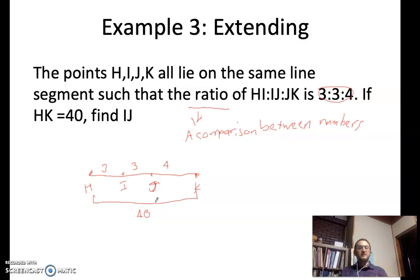So the question is, does 3, 3, and 4 actually reflect those distances? The answer is obviously no because 3 plus 3 plus 4 is not equal to 40. But they have the same ratio. So for every 3 inches of IJ, I have 4 inches of JK.